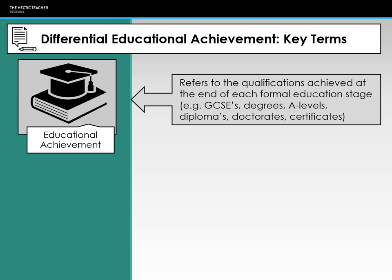University level isn't included because there's no consistency in the degrees taught — each university has their own course, their own assessment process, and their own system of allocating classifications. Universities are essentially private institutions, not controlled by government policy like schools are. So educational achievement refers to students' achievement at the end of Key Stage 2, Key Stage 4, and Key Stage 5.